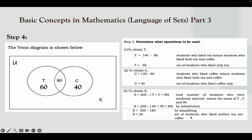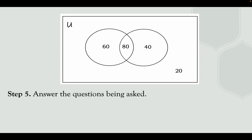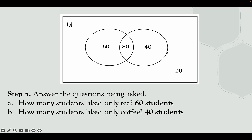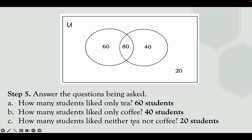Those 20 students don't like coffee or tea, so you place that value inside the universal set but outside the circles. The question answers are: 60 students like only tea, 40 students like only coffee, and 20 students like neither tea nor coffee. In identifying or solving problems involving set operations using Venn diagram, you need to put first the intersection — the common element of all given sets.